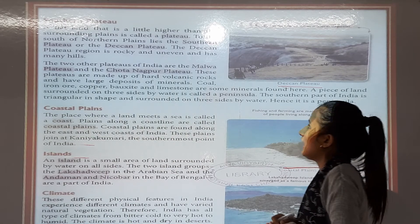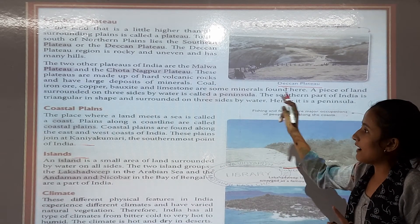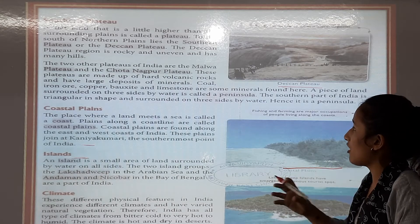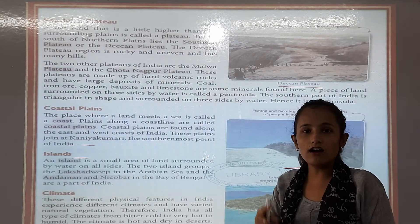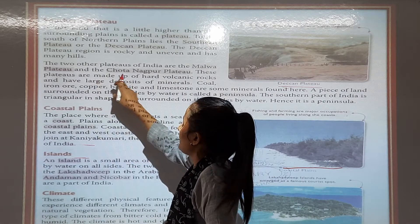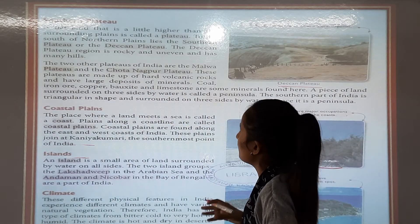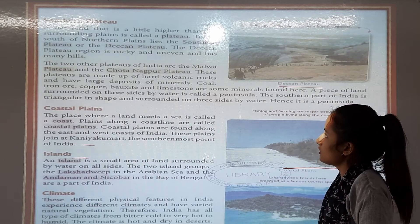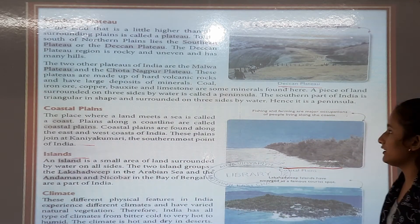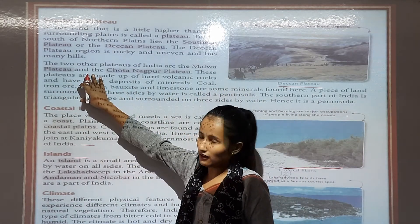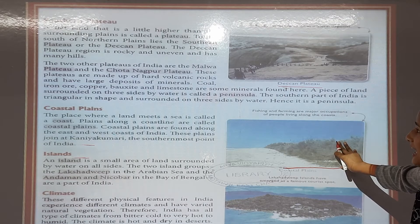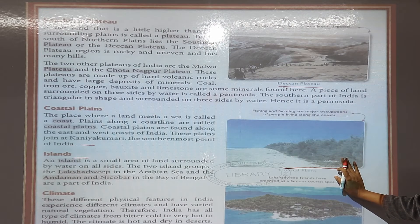The two other plateaus of India are the Malwa Plateau and the Chota Nagpur Plateau. These plateaus are made of hard volcanic rocks and have large deposits of minerals. Coal, iron ore, copper, bauxite, and limestone are some minerals found here in the Malwa Plateau and Chota Nagpur Plateau. A piece of land surrounded on three sides by water is called a peninsula.